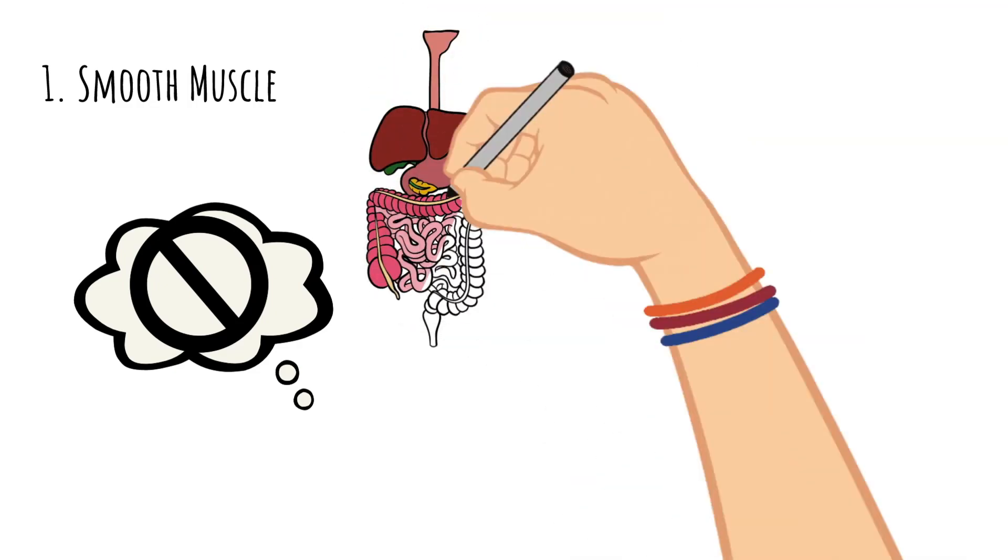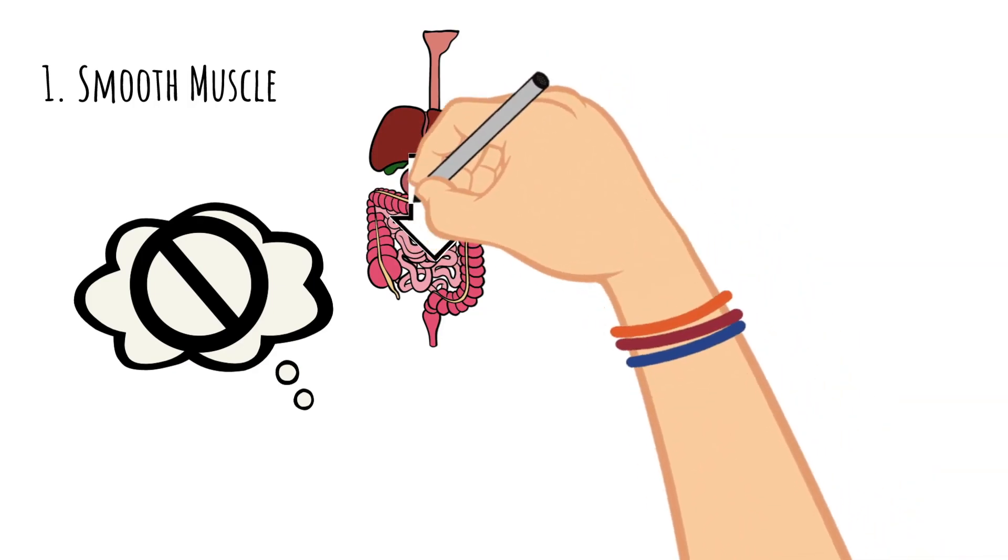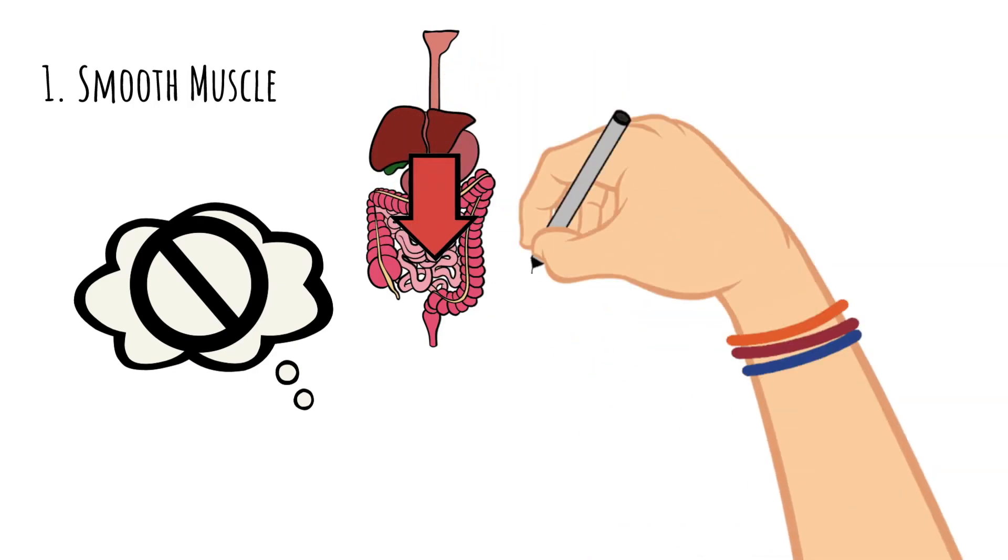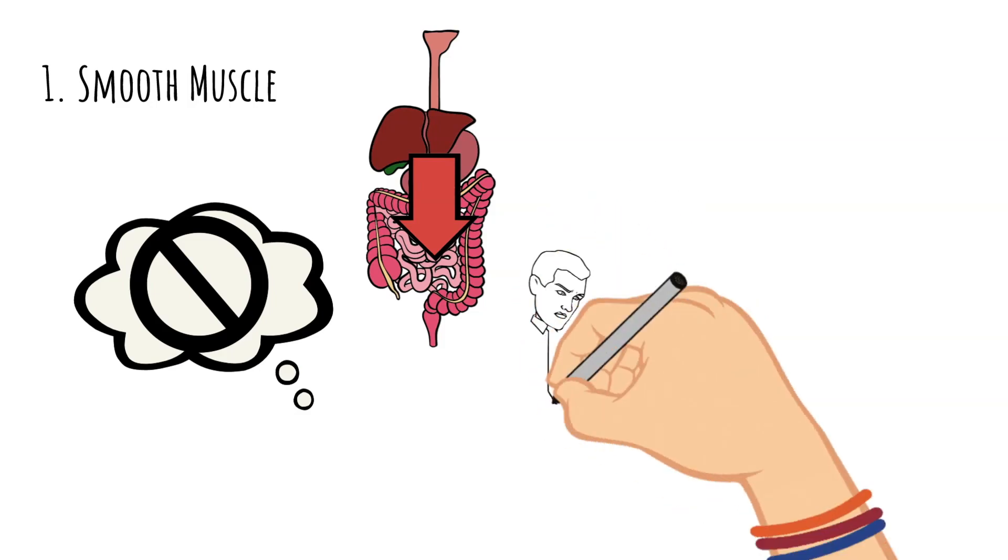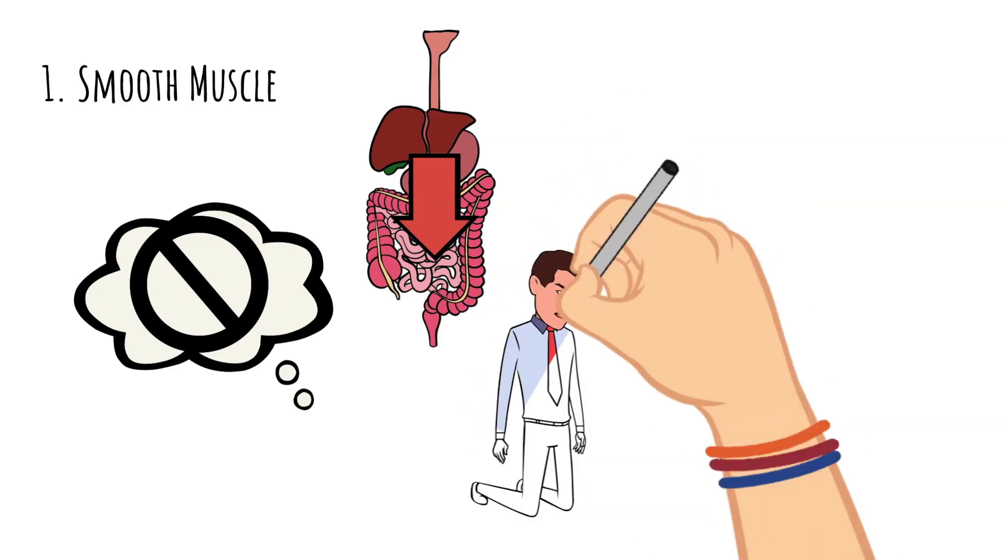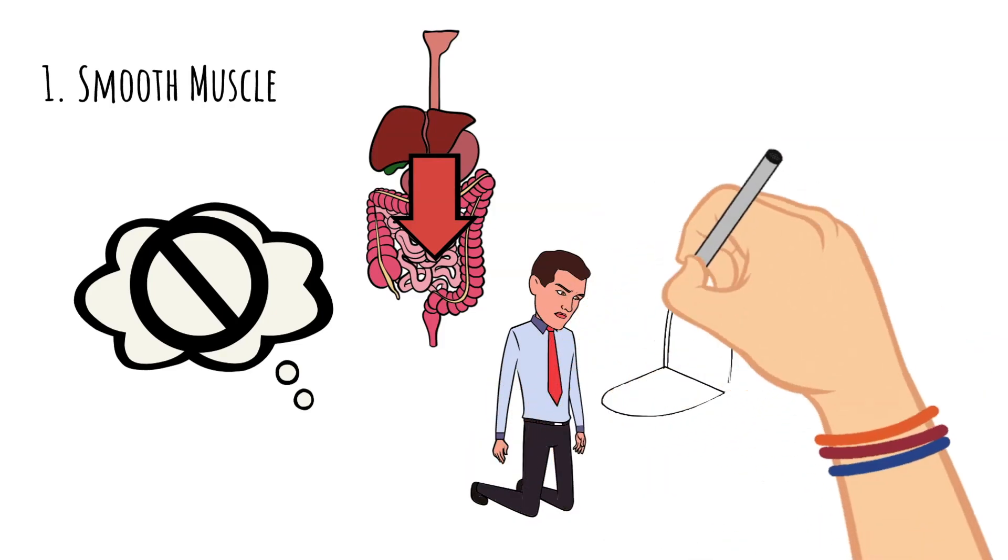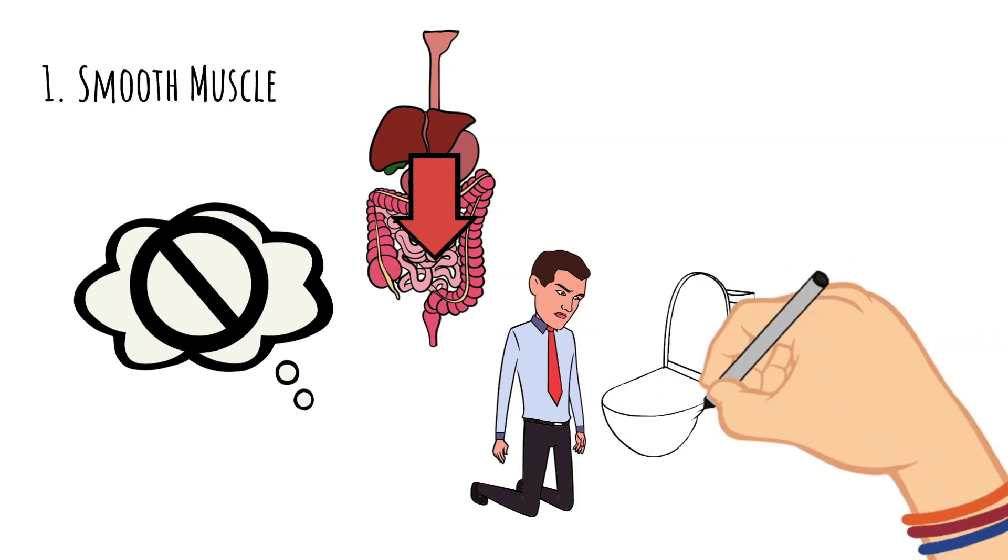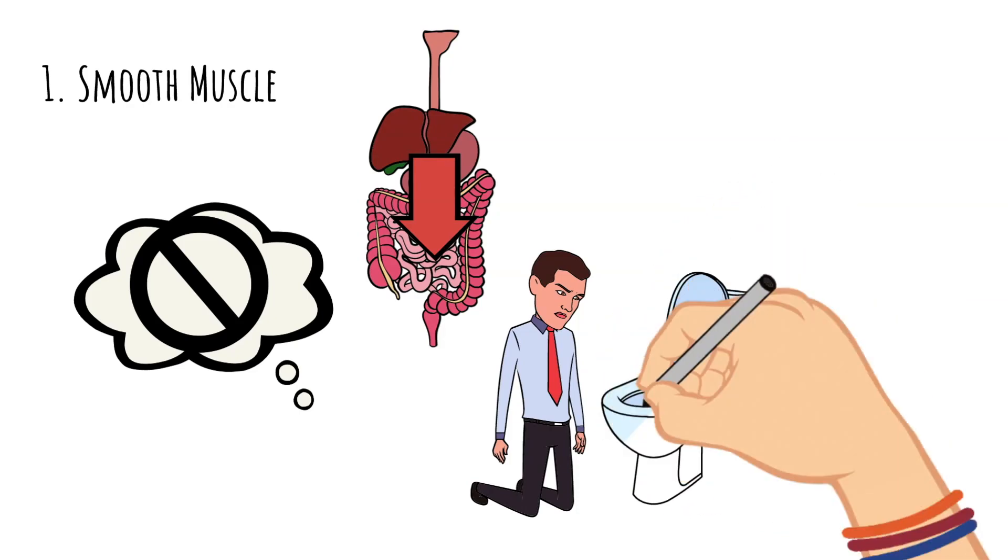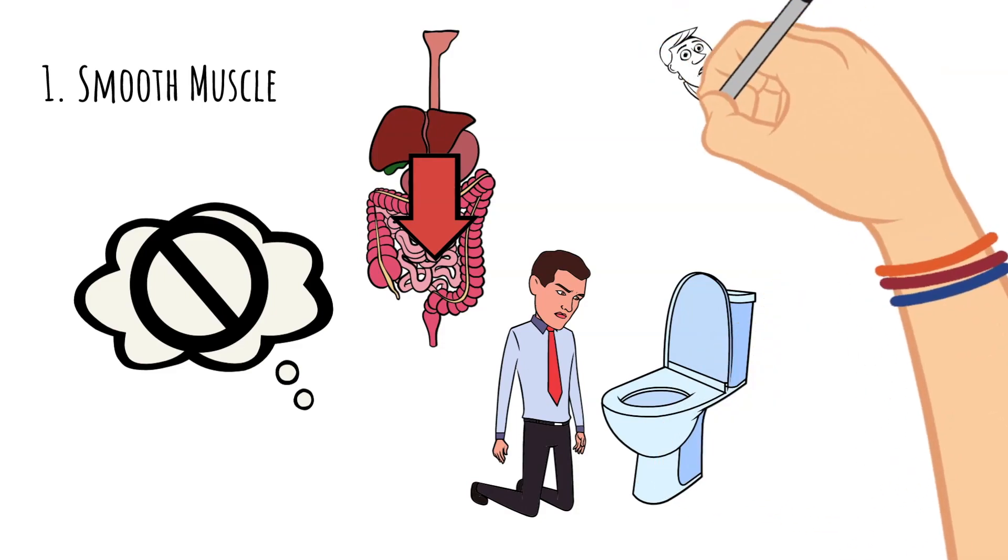In your stomach and digestive system, they contract and relax to allow food to make its journey through your body. They also come in handy if you're sick and you need to throw up. The muscles push the food back out of your stomach so it comes up through your esophagus and out of your mouth, hopefully into the toilet.